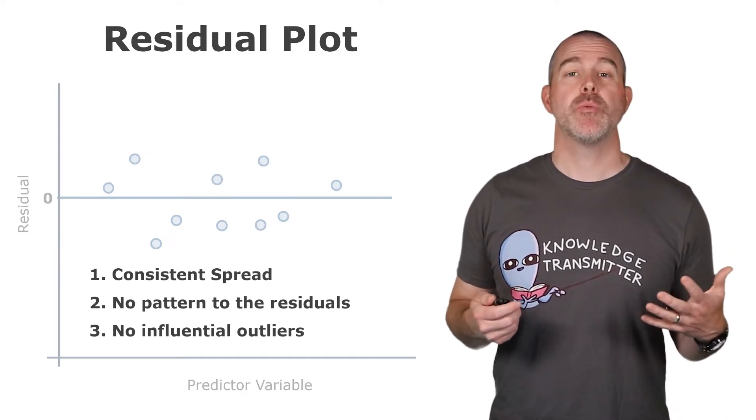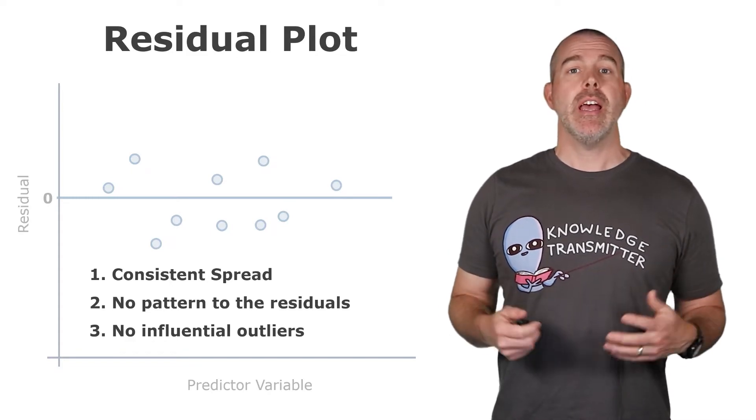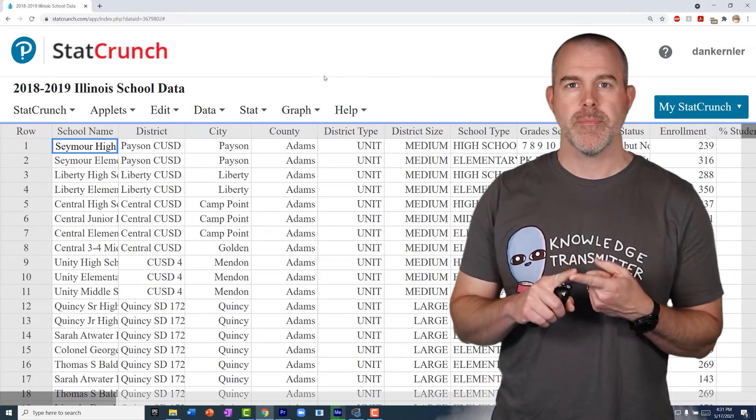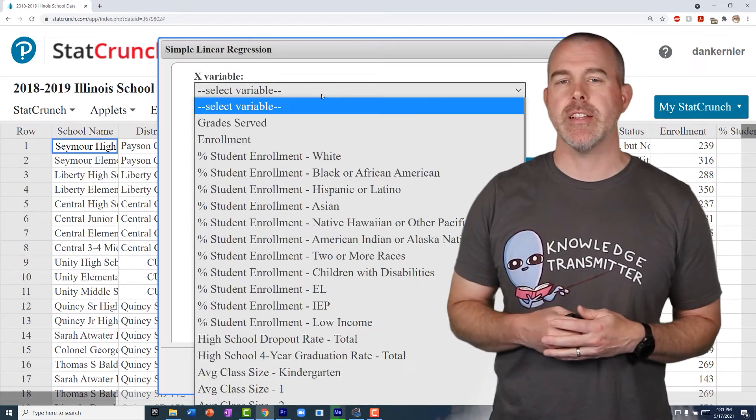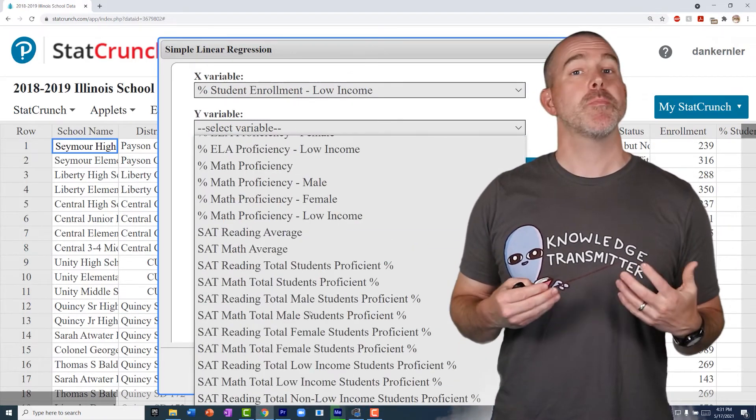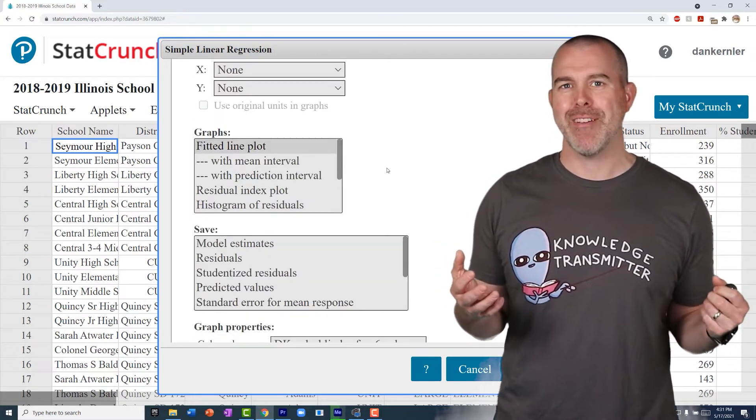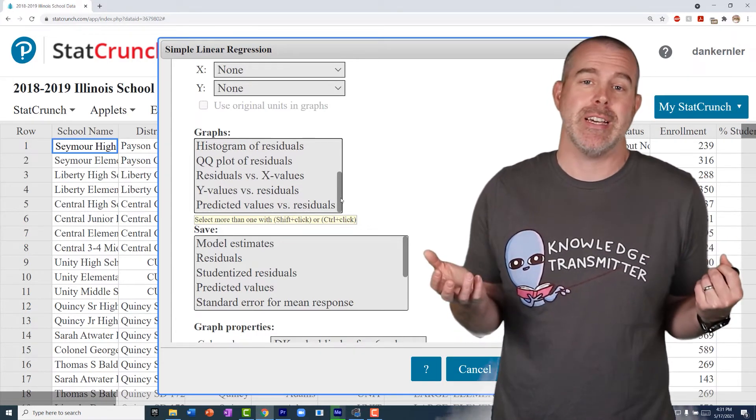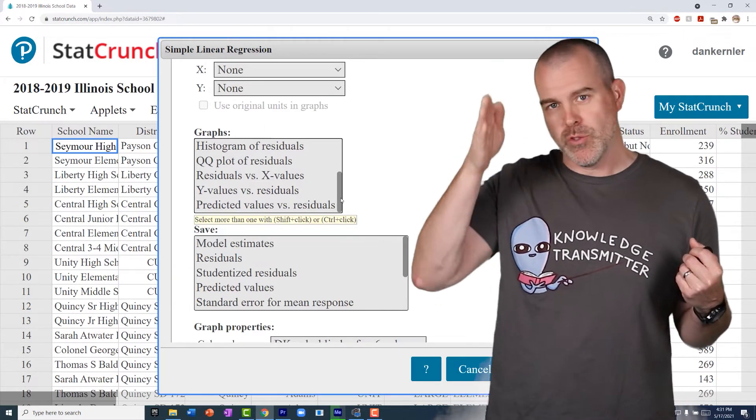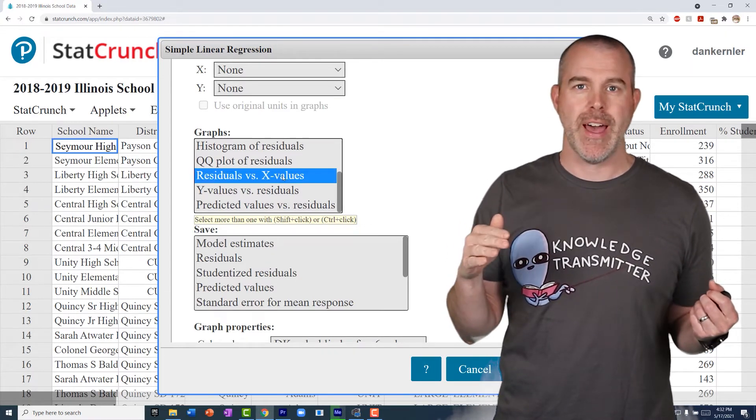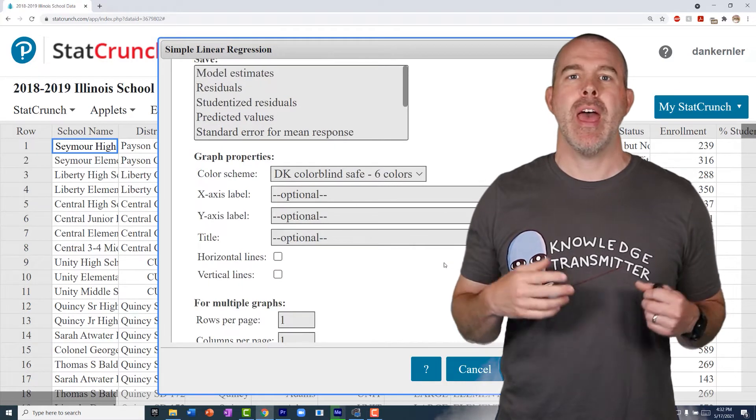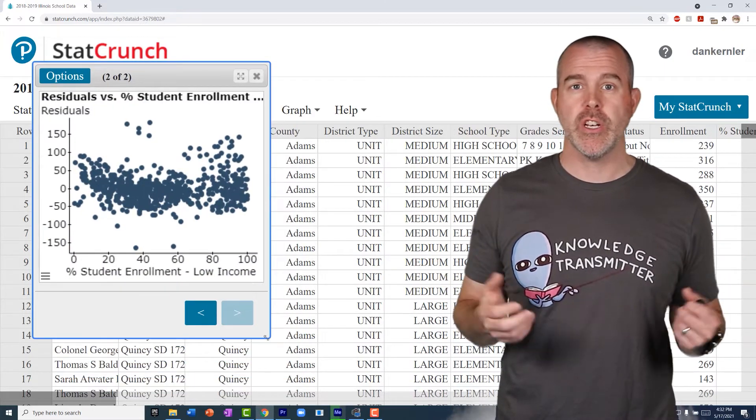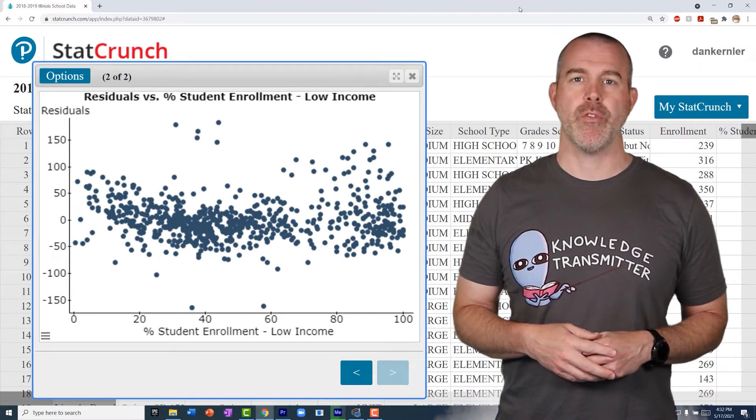What we want to talk about now is how to get this residual plot within StatCrunch. We'll have our education data. We'll just go stat, regression, simple linear, just like we've been doing. If we scroll down, there's a specific plot. What's tricky here is there's multiple plots that have residual in the word. You have to remember what a residual plot is. It's residual on the y versus the observed, the actual x value. So that's the graph we want to pick. We hit compute. And then we can go and see that residual plot. If we want to, we can modify it, add a title, clean up the labels, etc.